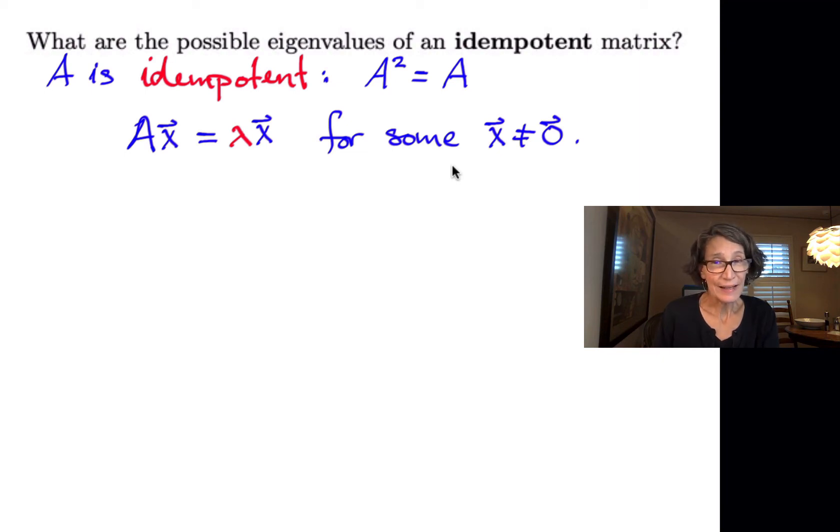Now, all we know is that A squared is equal to A. So we might as well multiply both sides of our equation by A and see what happens. So on the left, we get A times A times X. On the right, we get A times lambda times X.